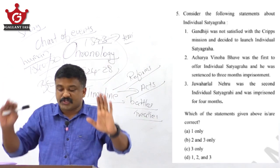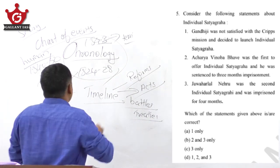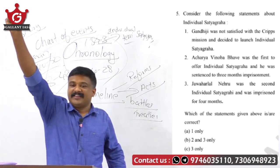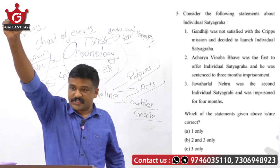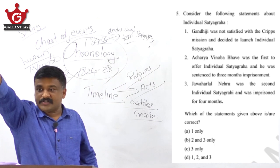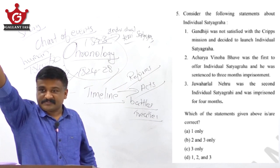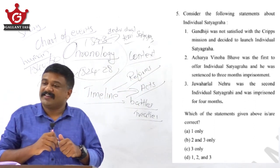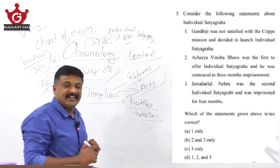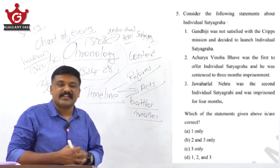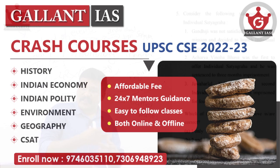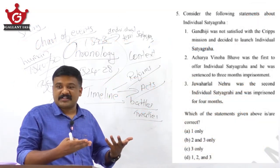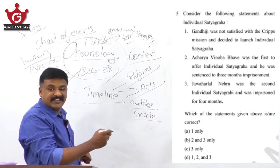Moving on to question number 5 — consider the following statements about individual satyagraha. What was individual satyagraha? Started by Gandhiji. The context is important — you must know the context. When he started it, why did he start it? It was after the failure of the August Offer, Cripps Mission, or Cabinet Mission — which mission? After failure of the August Offer.